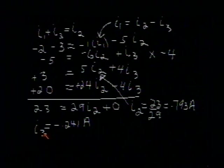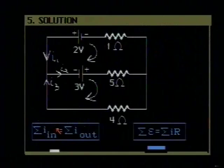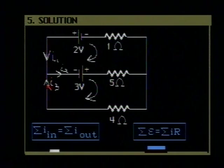What does this negative sign mean? It means that the original direction that we have assumed for I3, which was that direction, is actually incorrect. I3 is actually in the opposite direction.